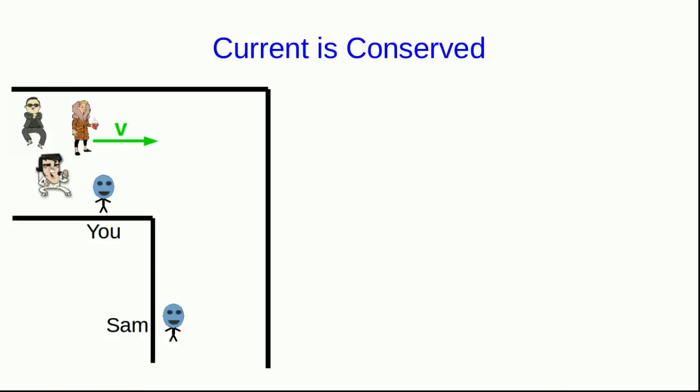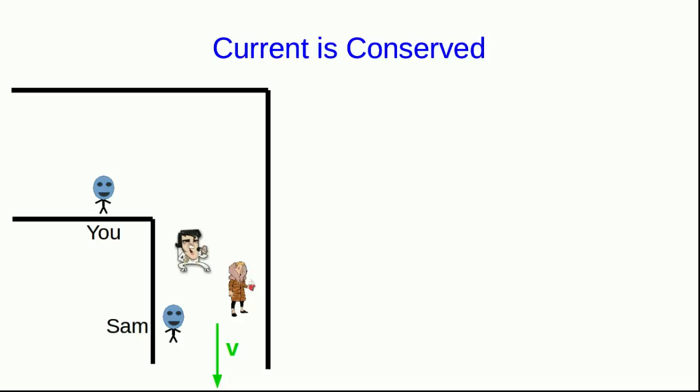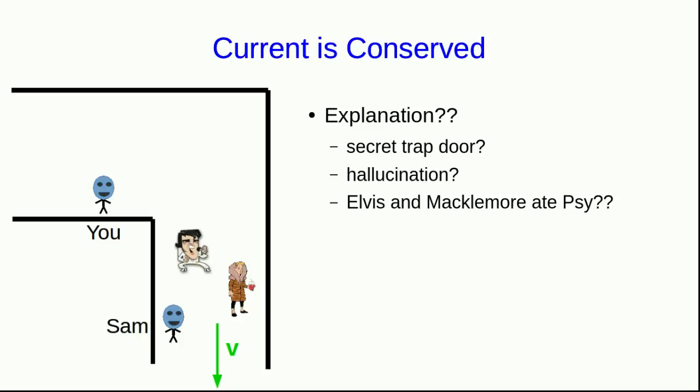Well, it's been too long since you and your friend Sam have had a disagreement over something, so here's one. You and Sam are observing who walks down a hallway and you're going to compare notes later. And at some point you notice that Psy, Elvis, and Macklemore walk past you. While comparing notes later with Sam, Sam says that only Elvis and Macklemore walked past. Wait a second. Something's fishy. What happened to Psy? Was there a secret trap door that he jumped down? Is this all a hallucination? Did Elvis and Macklemore eat Psy? I don't think we believe that Psy just spontaneously disappeared. I think we will agree that there is a law of conservation of people. And people don't just disappear as they're walking down hallways. Likewise, they don't just appear as they're walking down hallways.